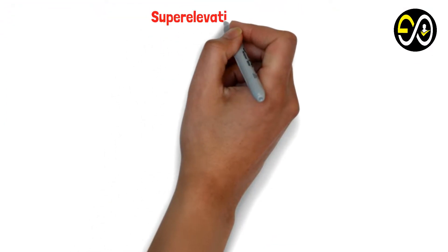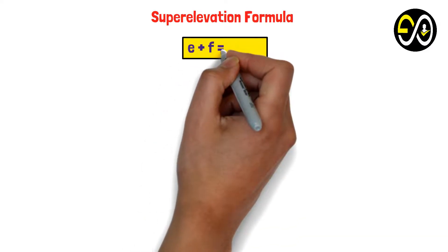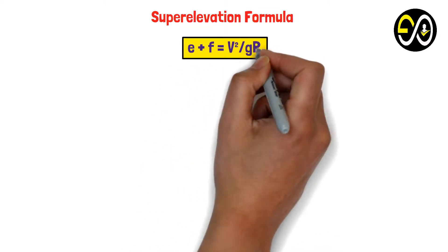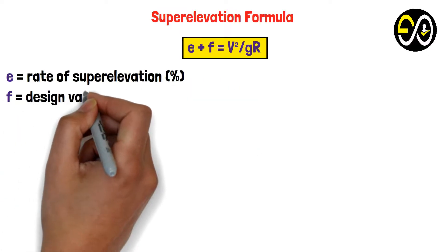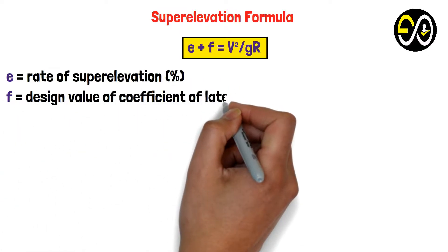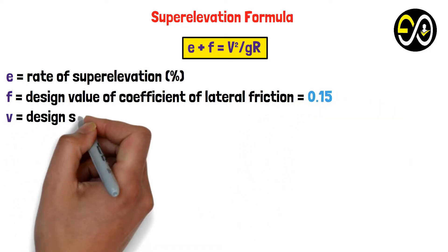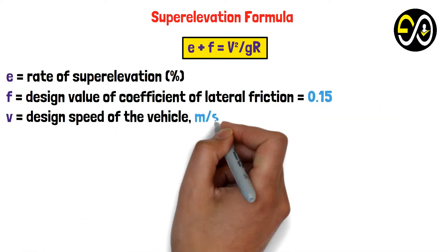Superelevation formula: e + f = V²/gR. Where e equals rate of superelevation, f equals design value of coefficient of lateral friction equals 0.15, and V equals design speed of the vehicle in meters per second.